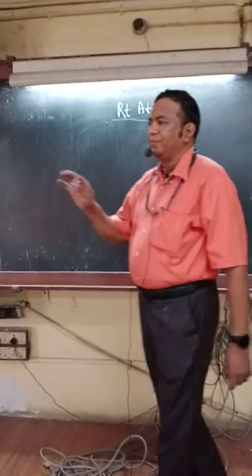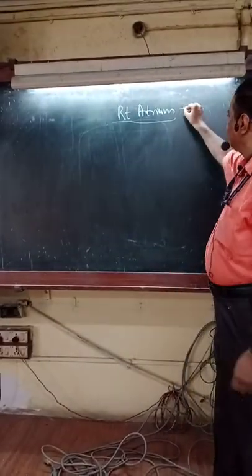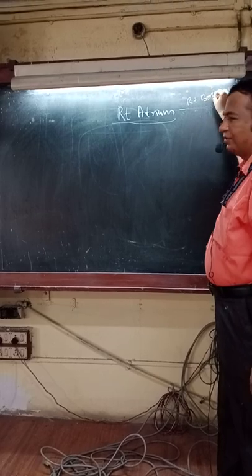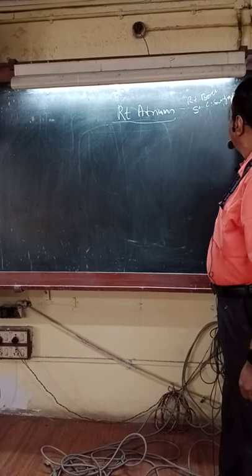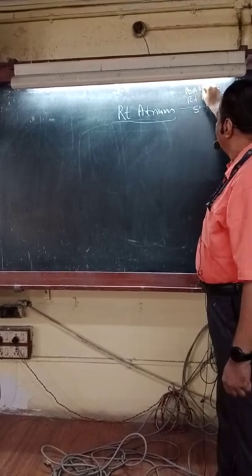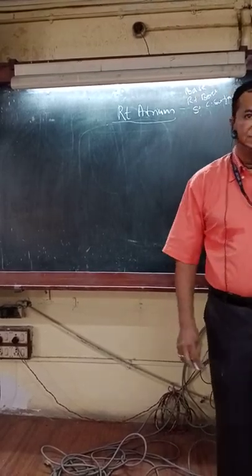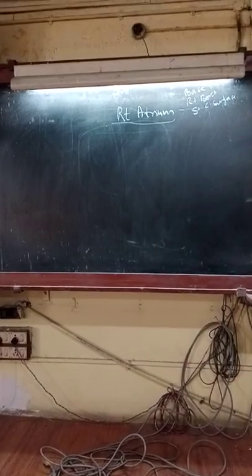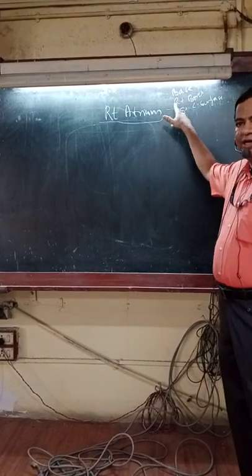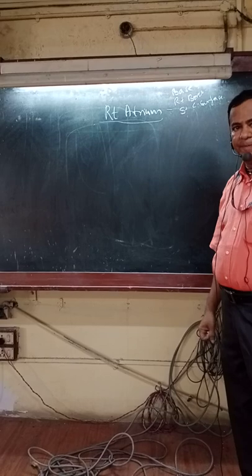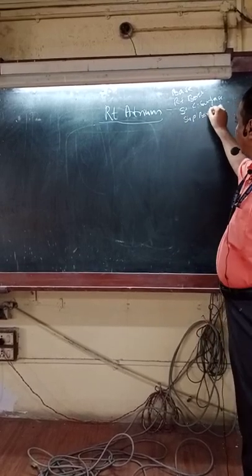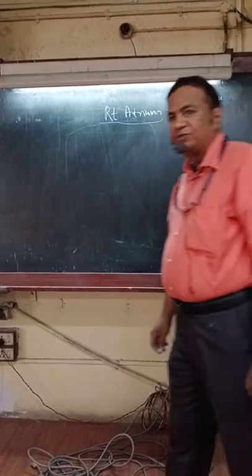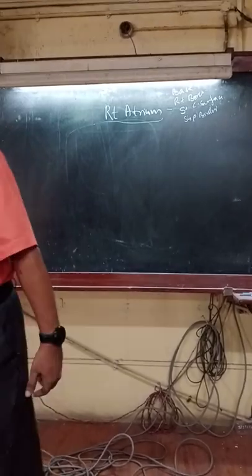The right atrium forms the right border, the right part of the sternocostal surface, part of the base of the heart, the right border of the heart, the sternocostal surface of the heart, and also part of the superior border of the heart.